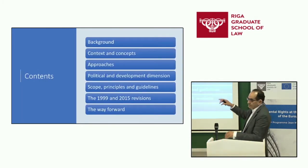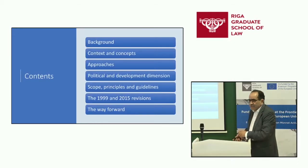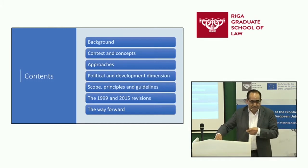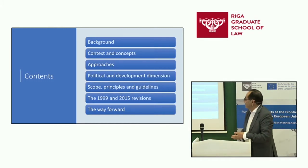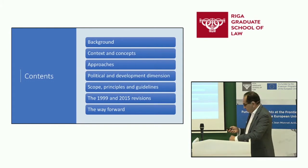What I'd like to go through with you: first, a background to the development of these principles. I will look at the concepts and the context in which this was developed, the different approaches. The political and development dimension is a very important element here — that is perhaps the link with the fundamental human rights aspect of consumer protection. Then we will go through the scope, principles, guidelines, the last revisions, and the way forward.